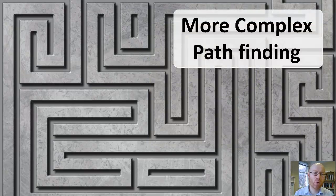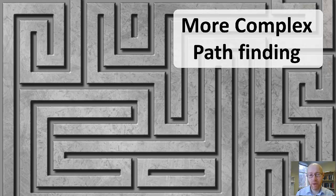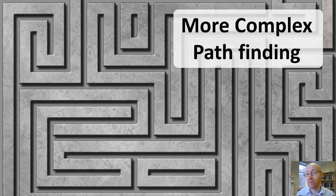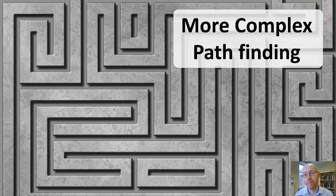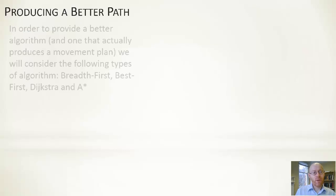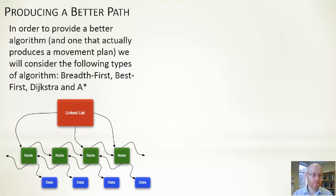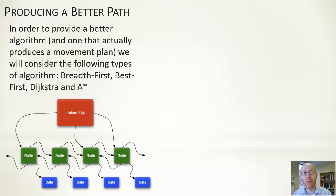Let's look at more complex algorithms that produce better quality paths. The previous ones are okay in open environments but don't produce sensible paths in closed indoor environments. We'll need to use more computational resource — CPU time and memory — to find a better quality path. We'll look at four: breadth-first search, best-first search, Dijkstra search, and finally A*, which is the de facto standard in games for path planning.